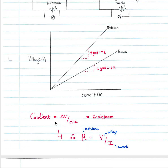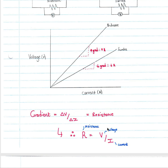The gradient, which is the change in V over the change in I, gives us resistance, so R equals V over I. This formula is on your formula sheet. R is resistance, measured in ohms; voltage is measured in volts; and current is measured in amps.